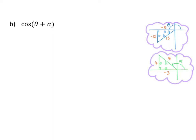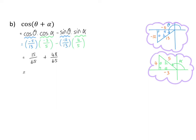In question B, we have cos of theta plus alpha. Again, we only have triangles for alpha and theta separately, so we use the compound angle identity to break this into cos of the first angle multiplied by cos of the second angle, minus sin of the first angle multiplied by sin of the second angle. We use the blue triangle for ratios in terms of theta, and the green triangle for ratios in terms of alpha. The result for cos of theta plus alpha is 63 over 65.